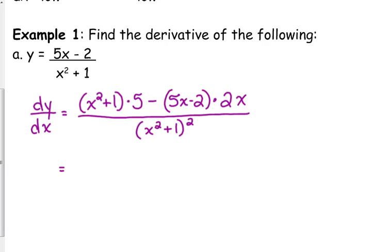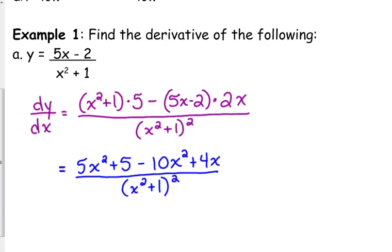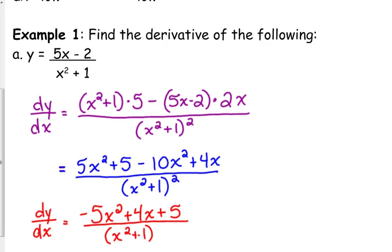Okay, so we do want to clean this up a little bit. Distribute the 5, so we've got 5x squared plus 5. Distribute a negative 2x is how I look at it to make sure that I get that negative distributed. So that becomes negative 10x squared plus 4x. Now, I am not going to multiply out the bottom. I'm going to leave that in factored form, because every once in a while we run into a scenario where we can factor and then we can cancel. 5x squared minus 10x squared is negative 5x squared plus 4x plus 5. So that is an application of the quotient rule.